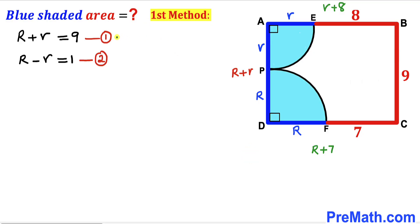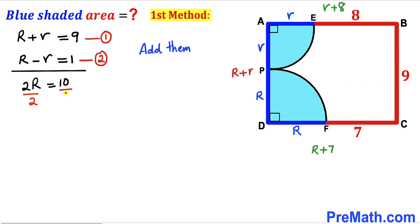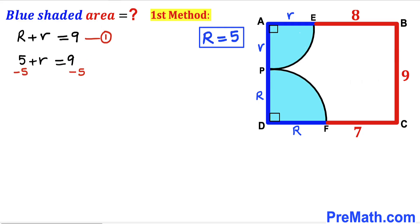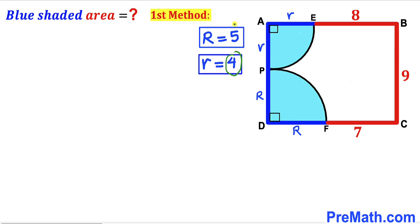We now have equation 1 (R + r = 9) and equation 2 (R − r = 1). Adding them, the r terms cancel, giving 2R = 10, so R = 5 units. Substituting R = 5 back into equation 1 and subtracting 5 from both sides, we find lowercase r = 4 units.